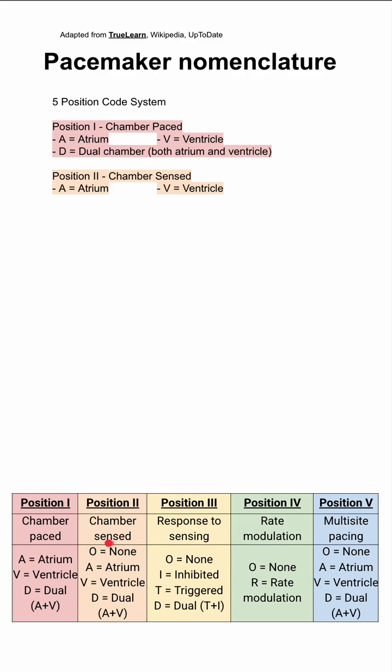The second position is the chamber sensed. The A again can be for atrium, the V can be for ventricle, and you can have D for dual, both. And you can also have an O here for no sensing. These devices will pace at a specified rate, ignoring the intrinsic rhythm of the heart.